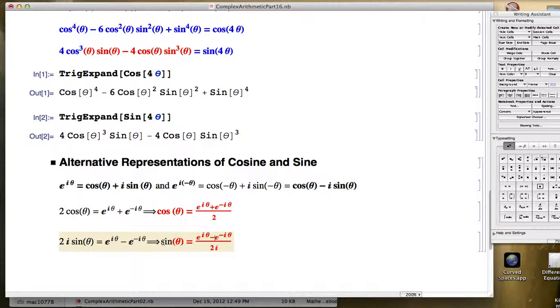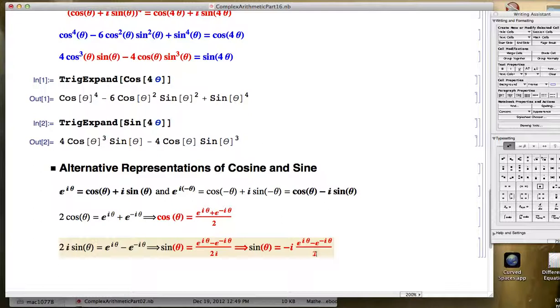You can write sine theta in this way. Dividing by i is the same as multiplying by negative i. So we can also say that sine theta is negative i times this thing without an i on the bottom.